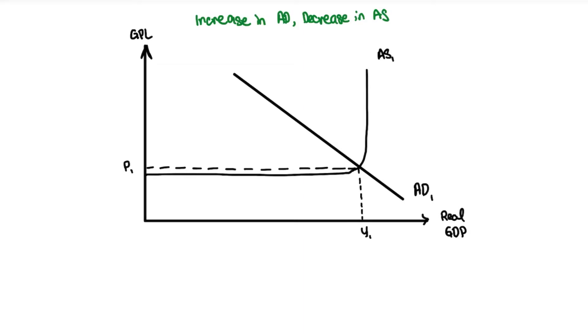Then we will start with an increase in AD. When there's an increase in AD, you want to shift the curve to the right, so you have got AD2 which is rightwards.